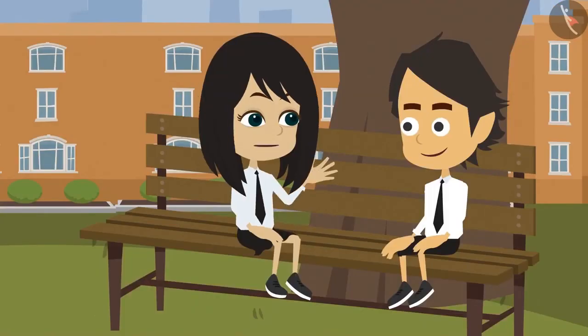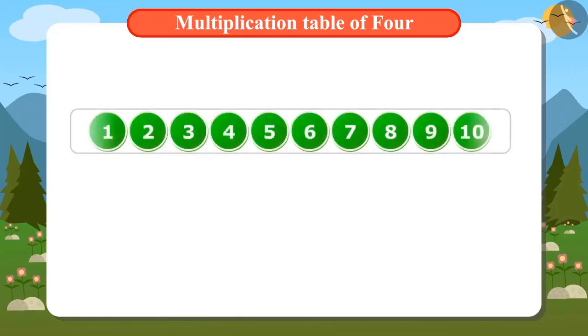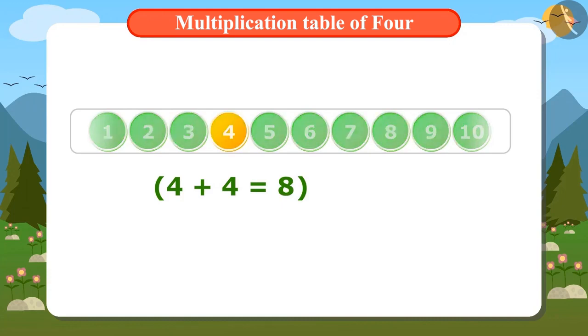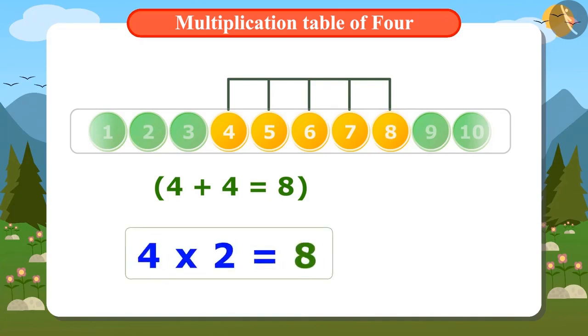There are two ways to find the next number. Either add 4 two times or find the fourth number after 4. Adding 4 two times gives us 8. Now we will find the fourth number after 4. That is first, second, third and fourth number is 8. The answer is the same in both ways. That is 8. That means 4 twos are 8.